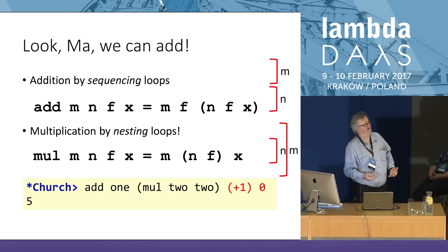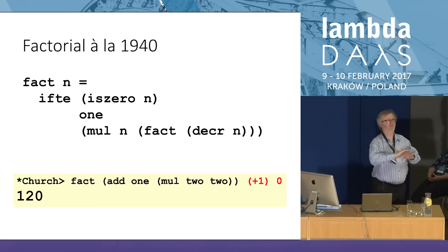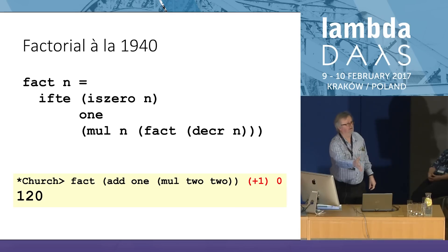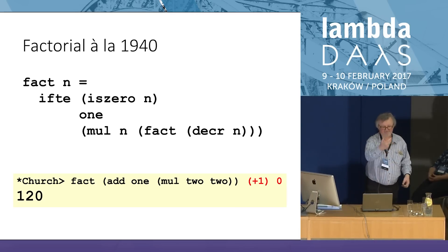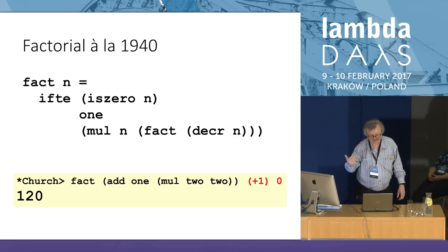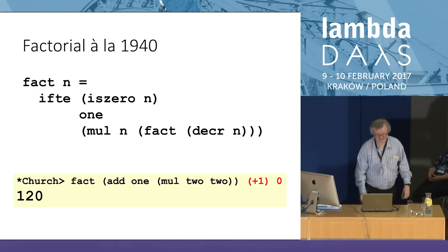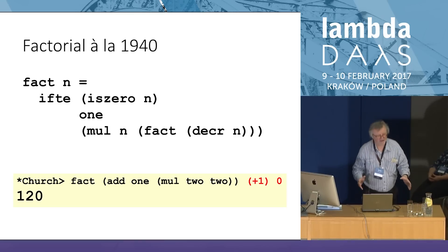You can go on in this vein. Let's take the factorial function — you have to have it in every talk on functional programming. This is how you could have written factorial in 1940, using if-then-else: if n is zero, return one; otherwise, multiply n by the factorial of decrementing n. Does this work? You can type this into Haskell. Taking the factorial of one plus two times two, and that many times incrementing zero — yes, you get 120, quite fast.